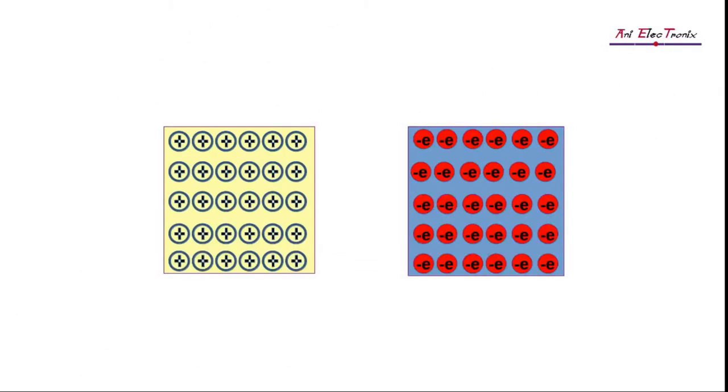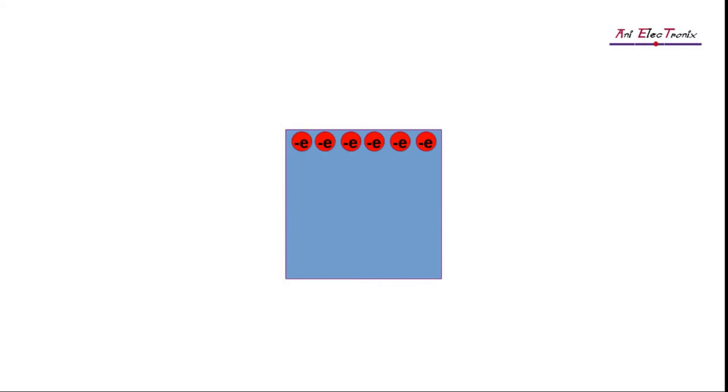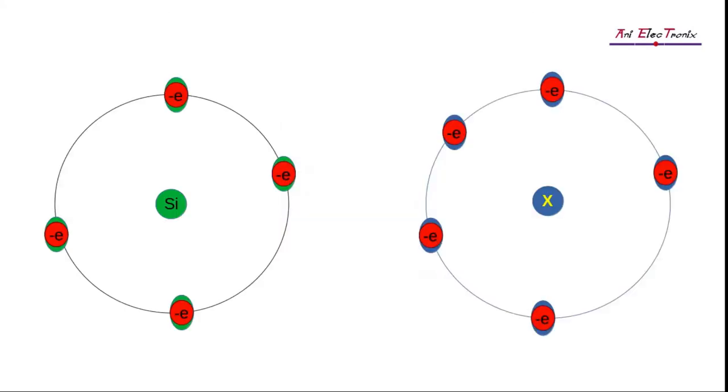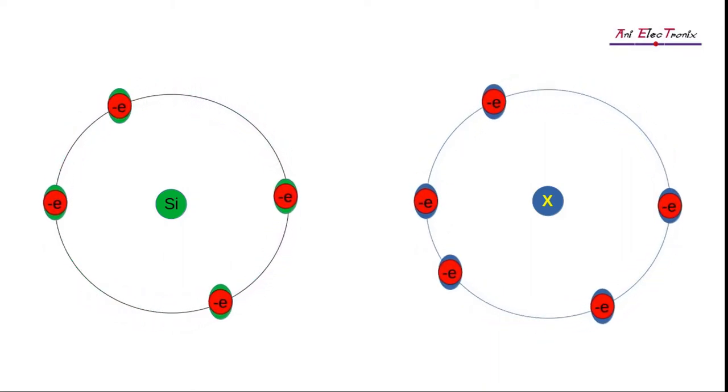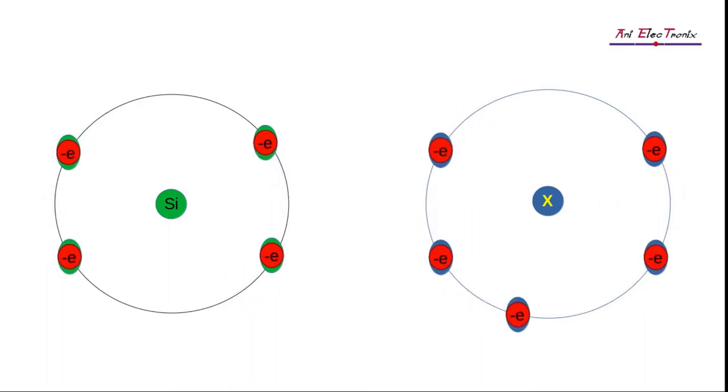We can either increase the number of electrons or holes in a semiconductor at a time. In order to increase the number of electrons in a silicon crystal, we need to add atoms that have more than four valence electrons, so that these atoms can donate electrons to the silicon crystal.